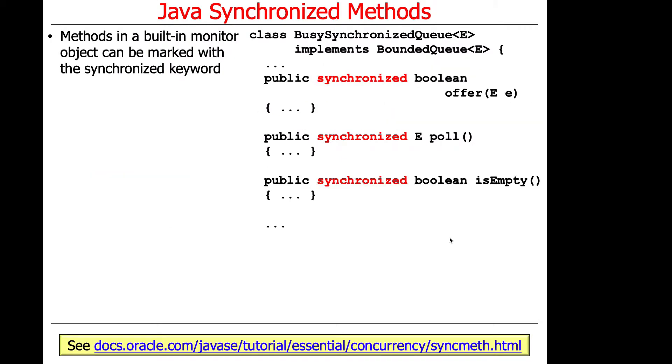So the way we're going to solve part of our problem is by using synchronized methods. So you can see here that the methods that we have that are part of the bounded queue interface, offer, poll, isEmpty, and so on, are now going to trivially be made thread-safe by putting the synchronized keyword in front of each of the signatures of the method.